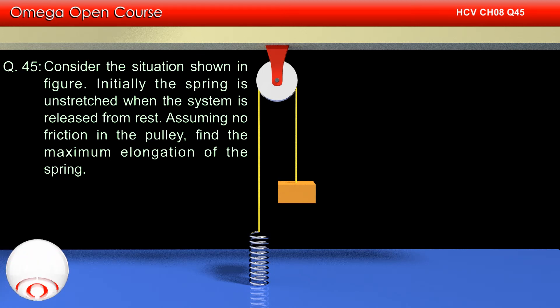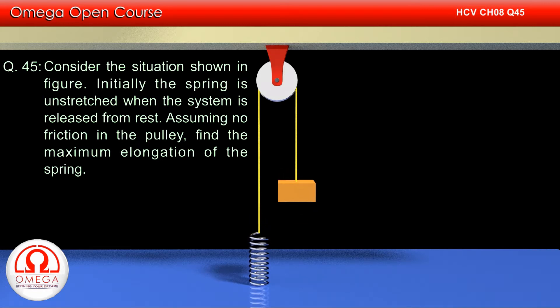Initially, the spring is unstretched when the system is released from rest. Assuming no friction in the pulley, find the maximum elongation of the spring.